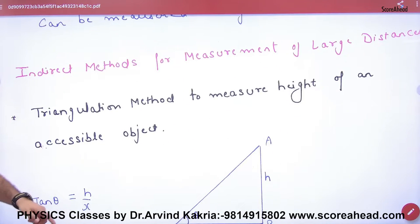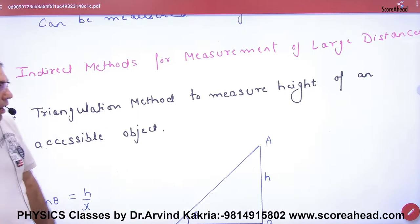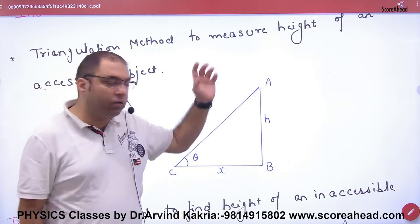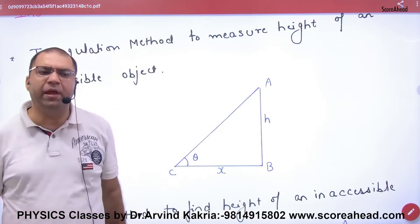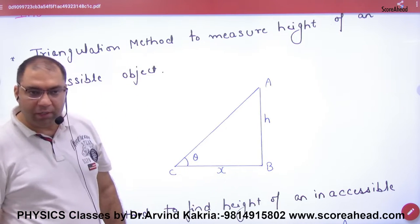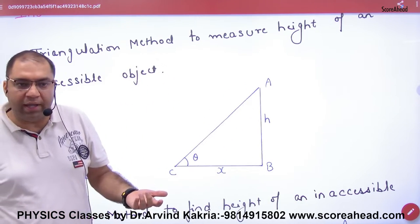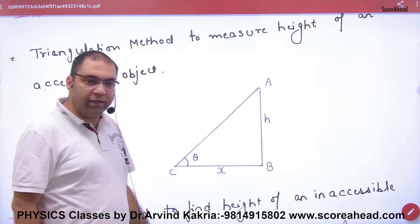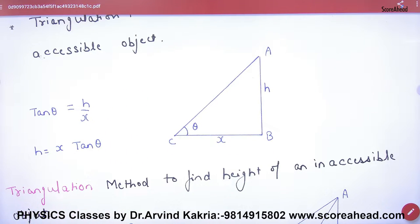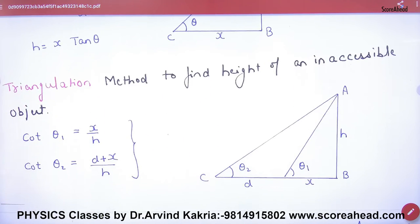For indirect methods of measuring large distances, consider measuring the height of a building. You stand on the ground at a known point and measure the horizontal distance x. Then you measure the angle of elevation theta to the top of the building. Using trigonometry, tan theta equals h upon x, so the height h can be calculated. This is an indirect method — no meter scale needed. This is called the triangulation method.